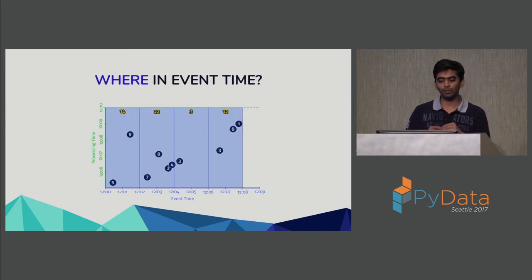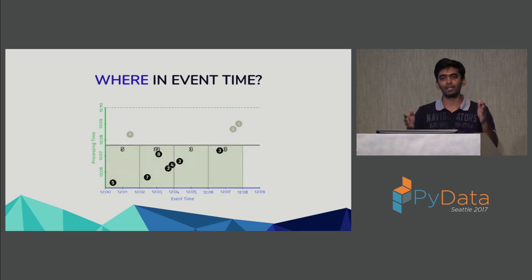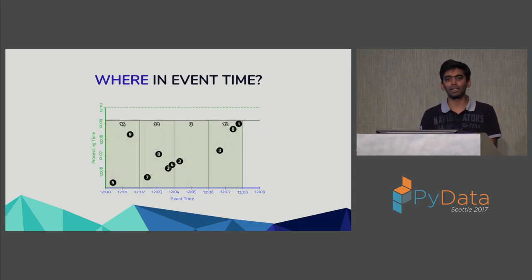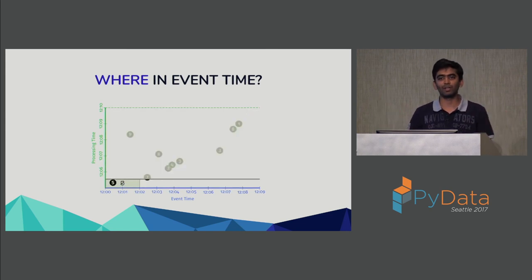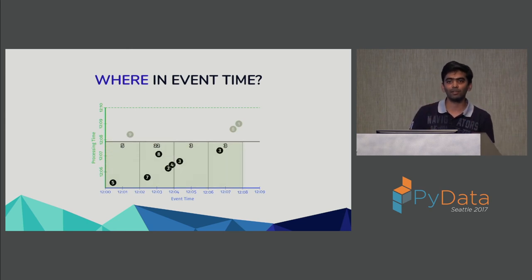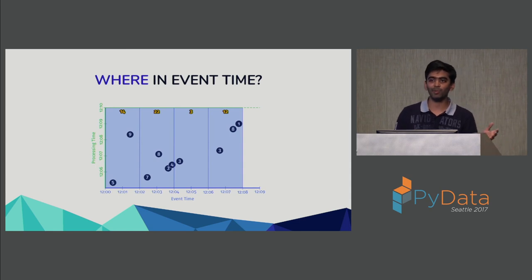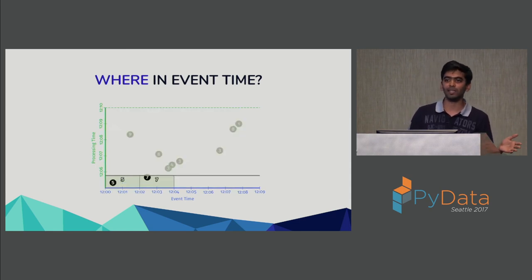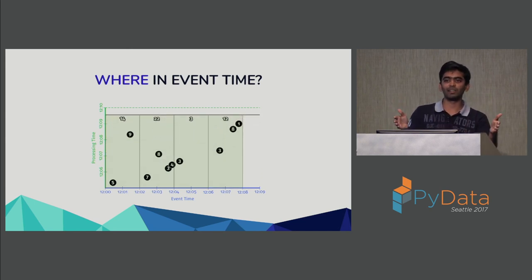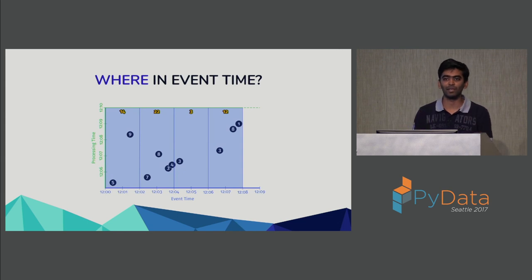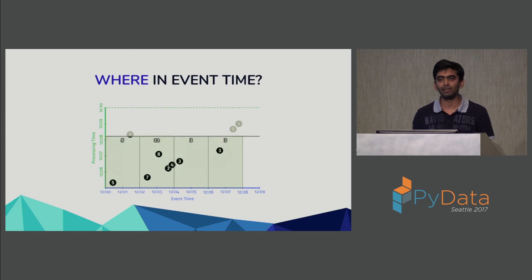We're still assuming that for a particular window we have seen all the data. For example, for the window from 12 o'clock to 12:02, we have seen all that data and that's the sum we're calculating. This is windowed batch — like calculating number of active users per day by splitting your stream by day and calculating the result for each window.